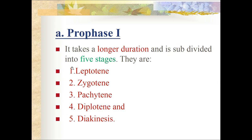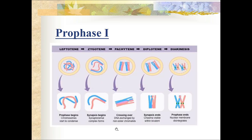Prophase I takes a longer duration and is subdivided into five stages: leptotene, zygotene, pachytene, diplotene, and diakinesis. During leptotene, chromosomes become uncoiled, assume a long thread-like structure, take up specific orientation inside the nucleus, and form a bouquet stage.